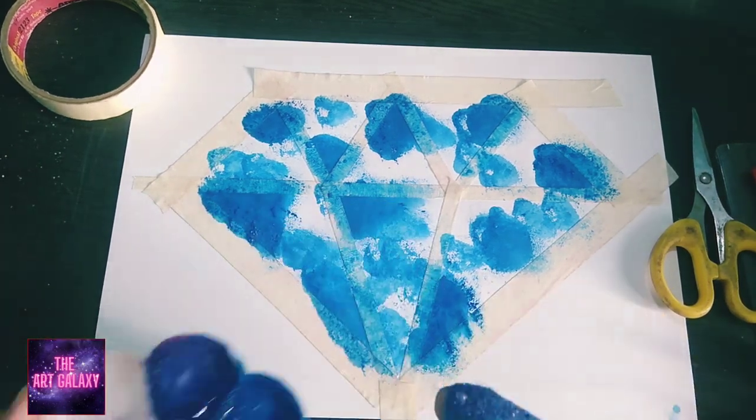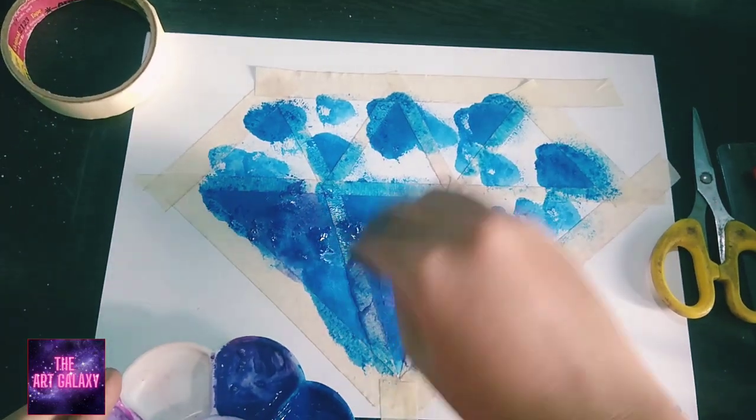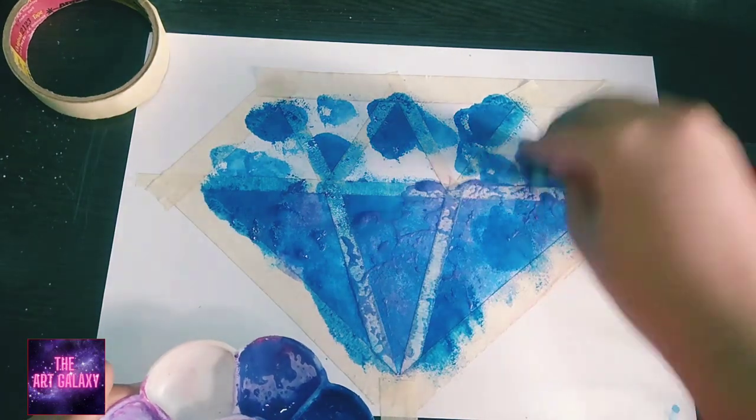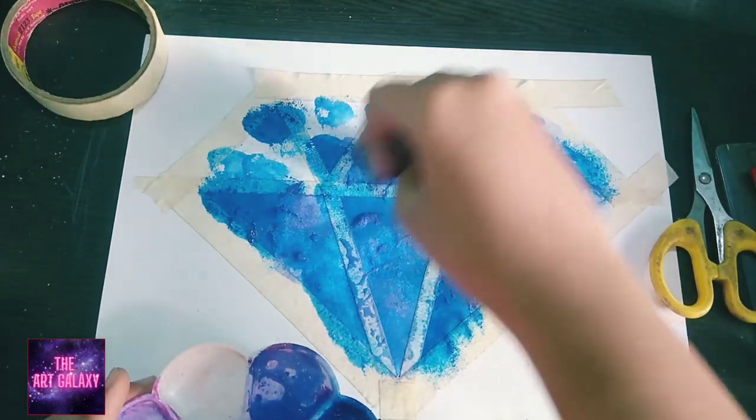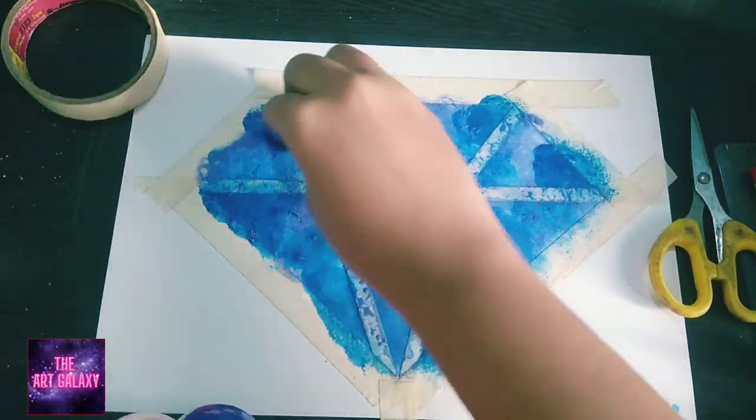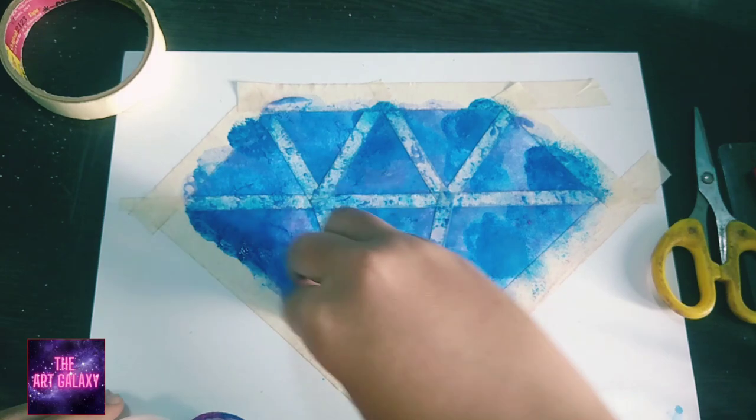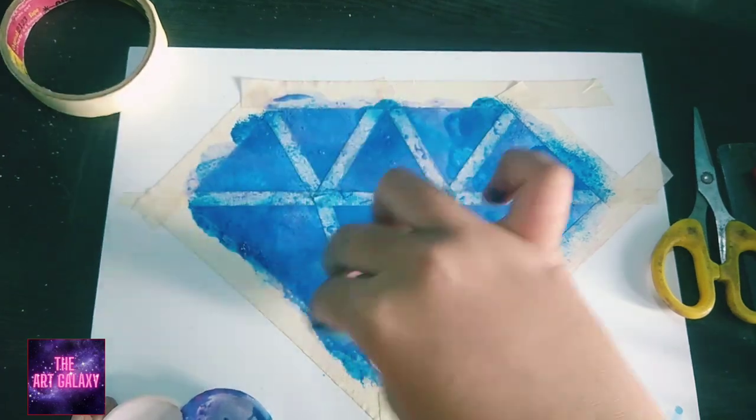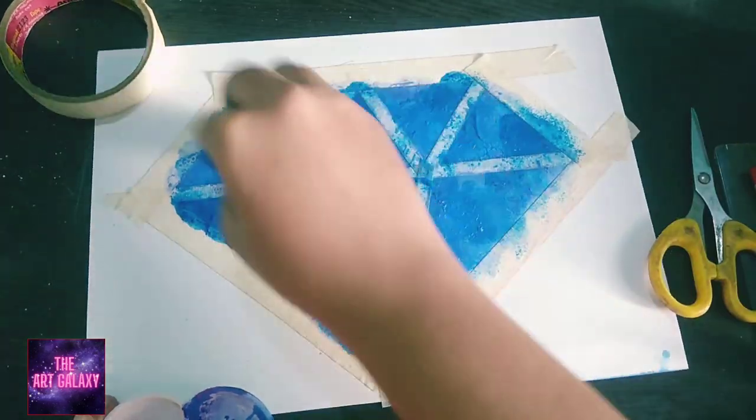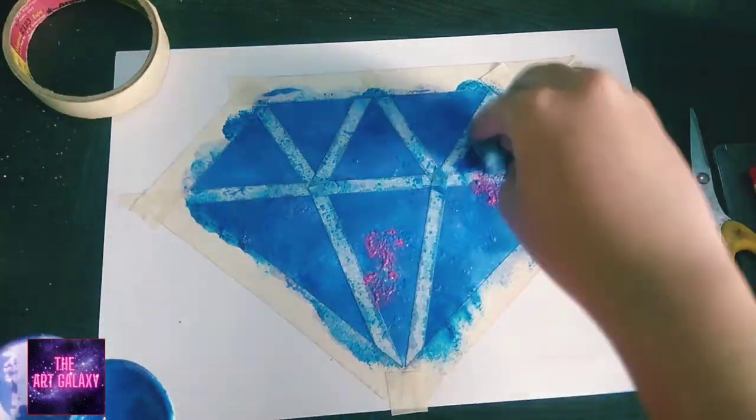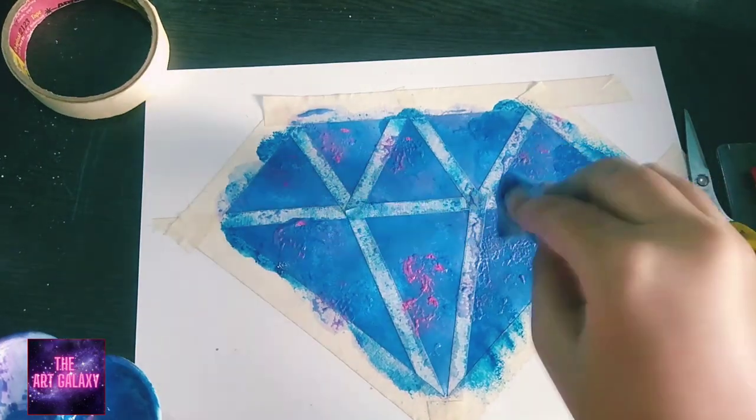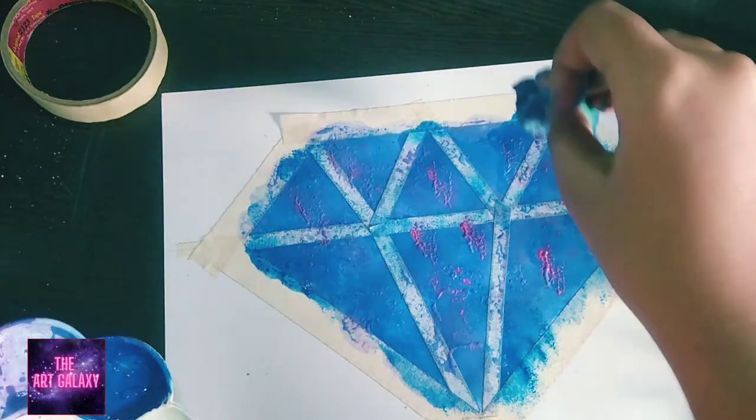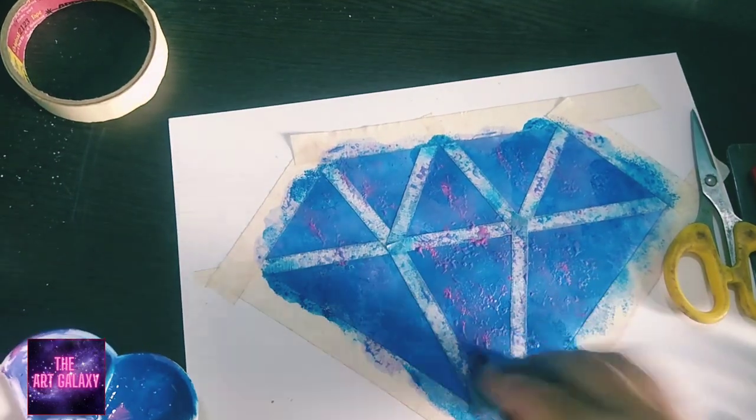Next we have to use purple color. Just dab your sponge and make sure you do not swipe it. Now we have to use pink color to give some highlights. Make sure your color is quite thick. Do not mix too much water in it.